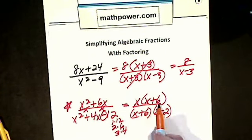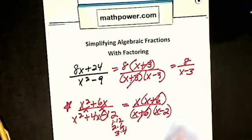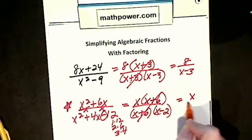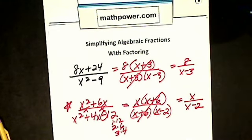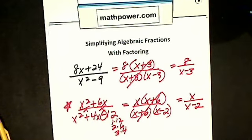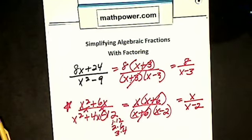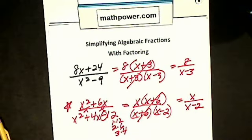Now I've got all factors, so I can cancel my x plus 6's. I'm left with x divided by x minus 2. Then I ask: can I cancel those x's? If either one is a term, I'm not allowed to cancel. This x is a term, so I'm not allowed to cancel. That's my answer.